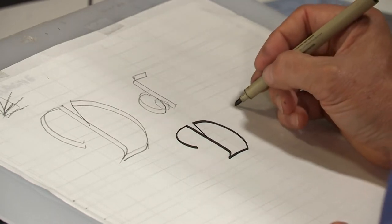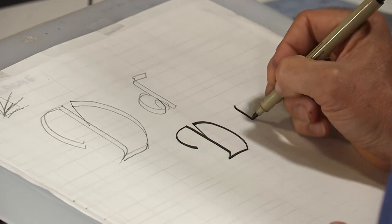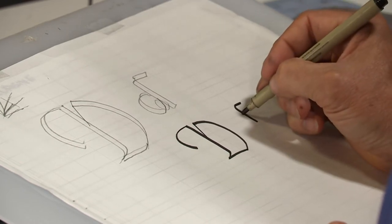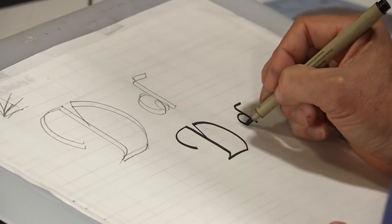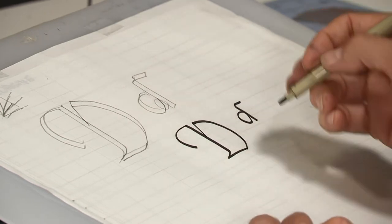Lowercase D. The stem first, then the flag, and then the loop. And again, pull up my pen so it's just making that fine line. There's a letter D.